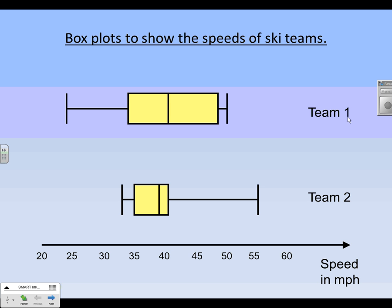Now officially or properly, your two comments are going to be, well, the median here is higher than the median here. So team one has a higher median. Therefore, on average, their skiers are faster. That's your first averages comment. Comparing medians, seeing what it means. Team one has a higher median. Therefore, on average, their skiers are faster.